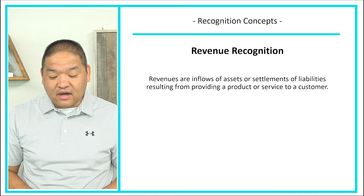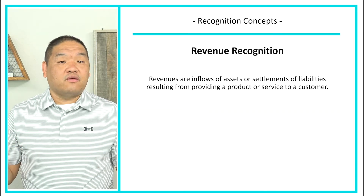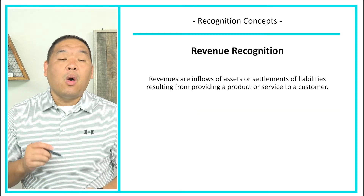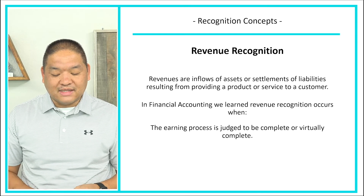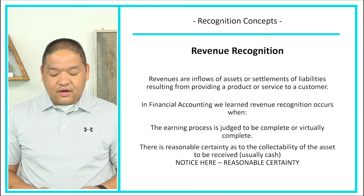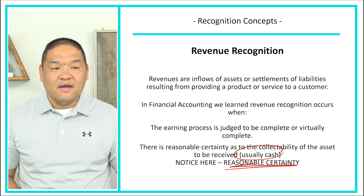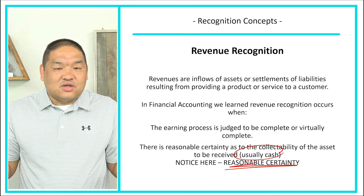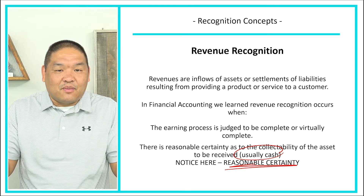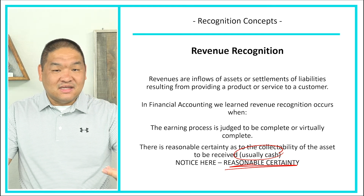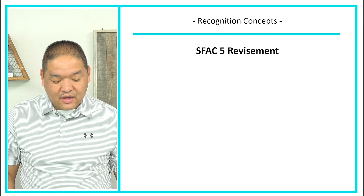If all four criteria are met, we can recognize the item in our books. Revenues are inflows of assets or settlements of liabilities resulting from providing a product or service to a customer. In financial accounting, revenue recognition occurs when the earning process is judged complete or virtually complete, and there is a reasonable certainty as to the collectability of the assets to be received — usually cash. If you sell a product but there's no reasonable certainty you'll be paid, you haven't really made a sale.